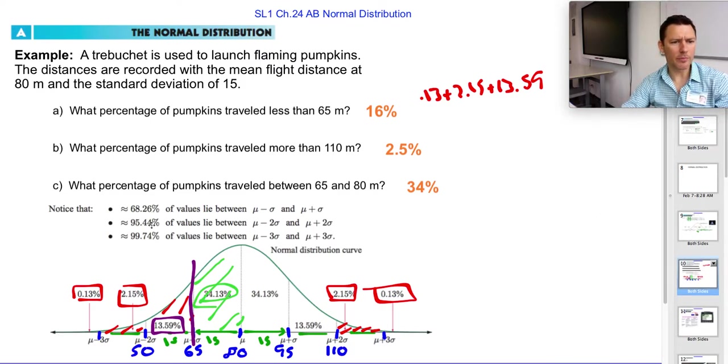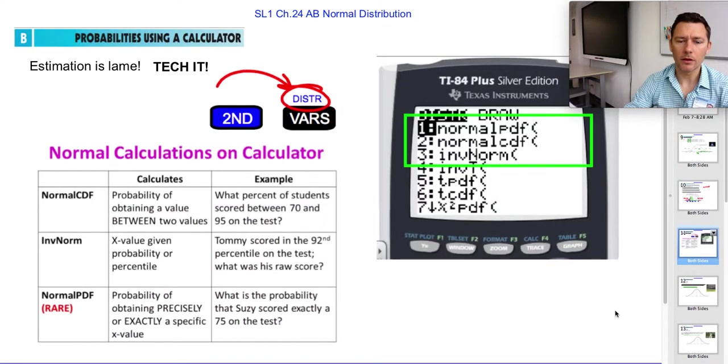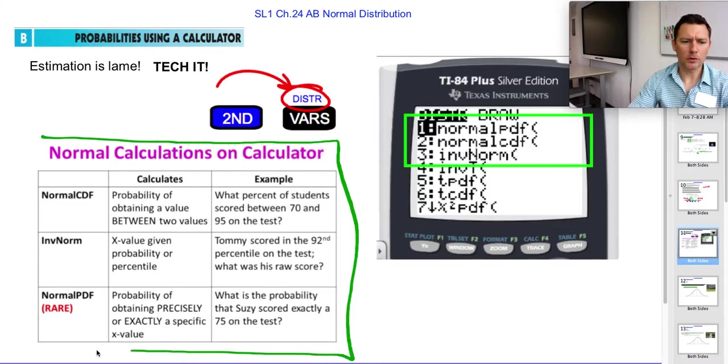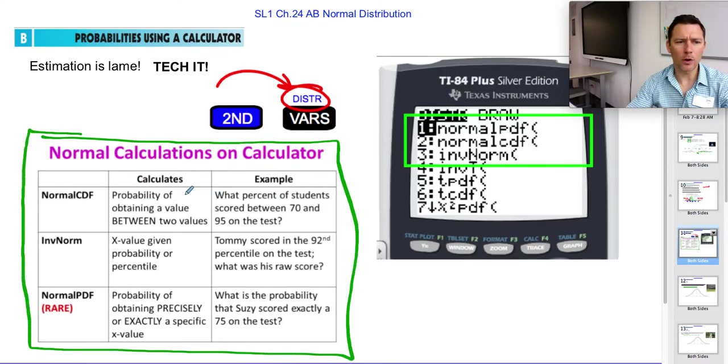You definitely don't need to memorize those numbers, but you might use them enough that you will. You can find these using your tech, and there's three that we're generally interested in. Normal PDF, normal CDF, and inverse normal. And really, it's just the CDF and the inverse normal that you see a lot of. The PDF is a little more rare, but I think this is a good thing to sketch down if you have a second, because it gives you an idea of what each one does.